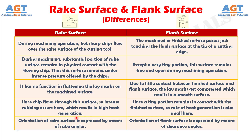Number five: orientation of rake surface is expressed by means of rake angles, whereas orientation of flank surface is expressed by means of clearance angles.